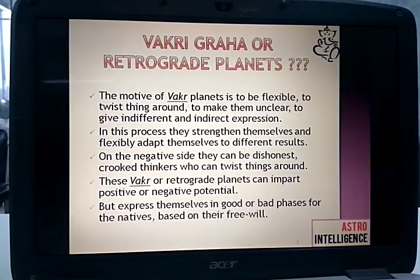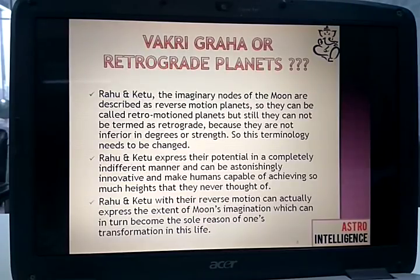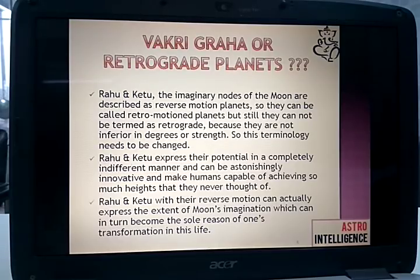Rahu and Ketu, the imaginary nodes of the moon, are described as reverse motion planets. So they can be called retro motion planets. But still, they cannot be termed as retrograde because they are not inferior in degrees or strength, so the terminology needs to be changed. Rahu and Ketu are the north node and south node and their motion is always reverse. The word used is reverse motion, so they can be called retro motion planets.